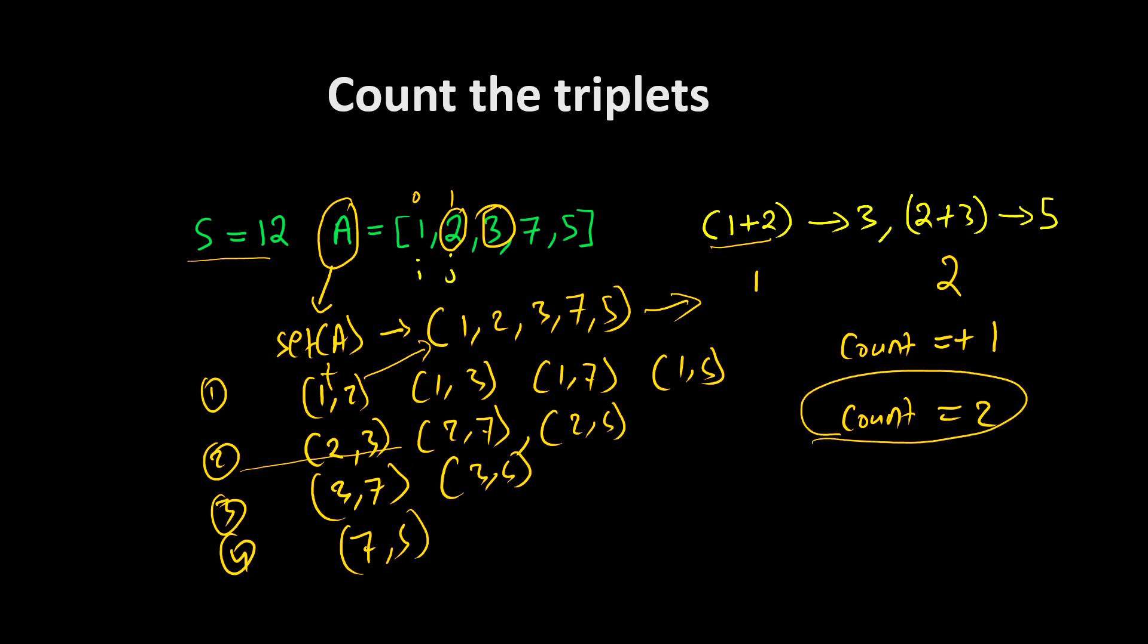After that, if you check every other combination, the triplet won't be existing, so this will be our final answer. This is the way we can approach towards the triplets. We can take a set variable and convert our array to a set.